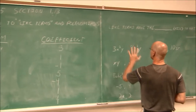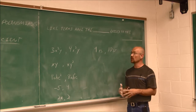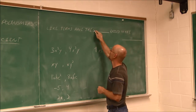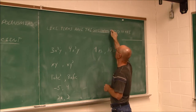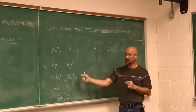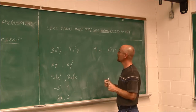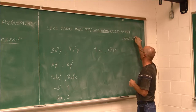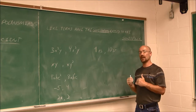Let's define what it means to be like terms. We understand coefficients and we know what variables are. But to be like terms, they have to have the same variable. If it contains an x, the other term must also contain an x. But they also have to be raised to the same power — that variable has to have the same exponent.